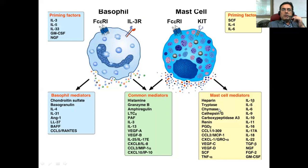You can see the group of mast cell mediators, which can contain heparin, tryptase, chymase, and cathepsin — different types of enzymes — renin and prostaglandin D2. There are also growth factors: vascular endothelial growth factors C and D, stem cell factor, tumor necrosis factor alpha, and different kinds of interleukins including colony stimulating factor. These are the factors specific to the mast cells. We call them mast cell mediators. The granules are filled with all these different types of enzymes and things doing different functions.